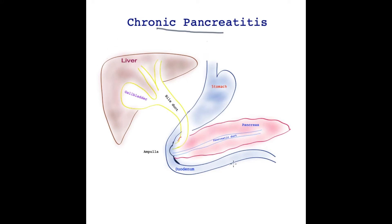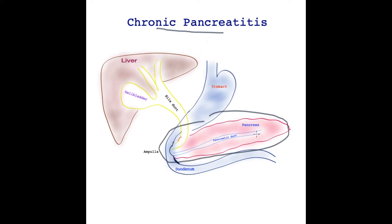Here you can see a cartoon drawing of the inside of the abdomen: the liver over here with a bile tube originating from the liver draining bile into the small bowel, the gullet connected to the stomach which turns the food over and passes it into the small bowel, and finally the gland — the pancreas over here.